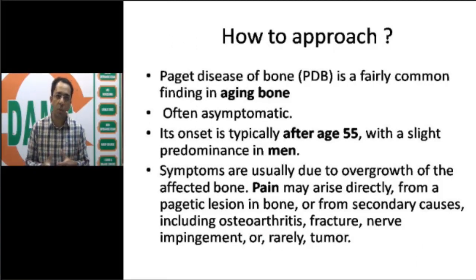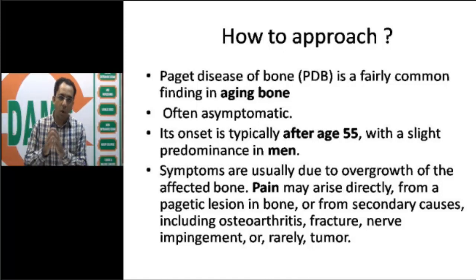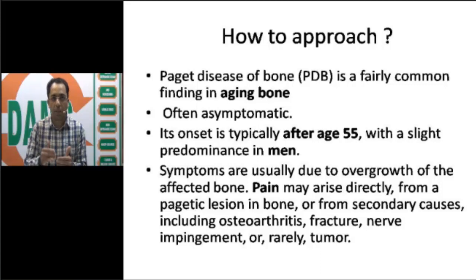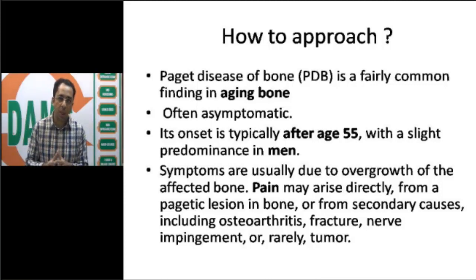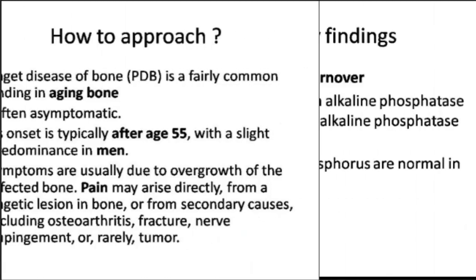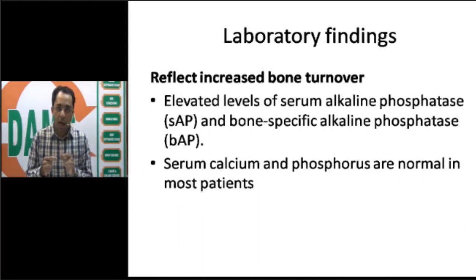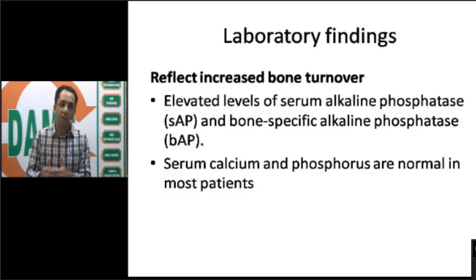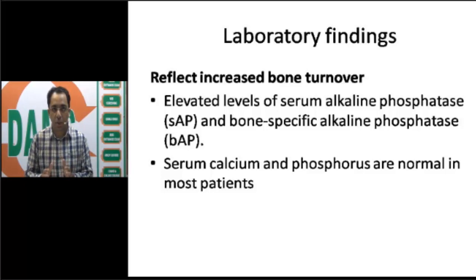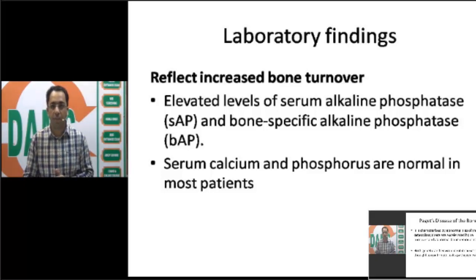Paget's disease is a fairly common disease in aging bone, often seen after the age of 55, slightly predominant in men, and often asymptomatic. The patient may present with pain if there is overgrowth of the affected bone - the pain could be from the pagetic lesion itself, secondary osteoarthritis, fracture, nerve impingement, or rarely a tumor. Laboratory findings reflect increased bone turnover: elevated serum alkaline phosphatase and bone-specific alkaline phosphatase. Importantly, serum calcium and phosphorus levels are usually normal.